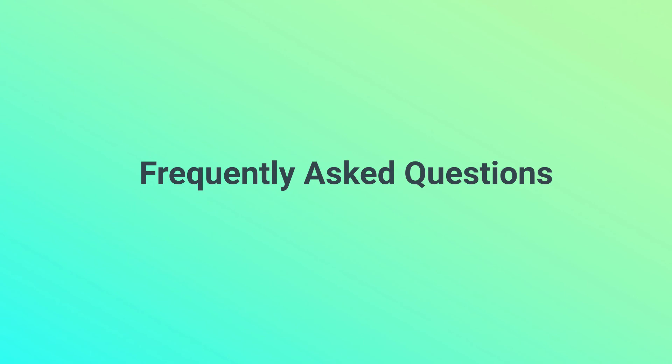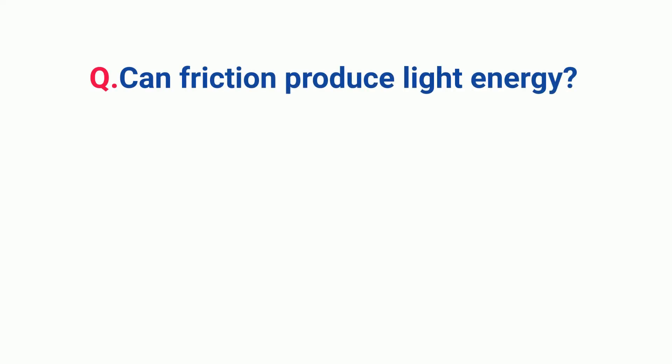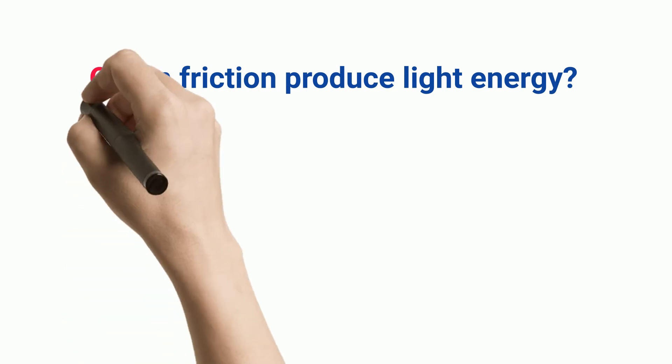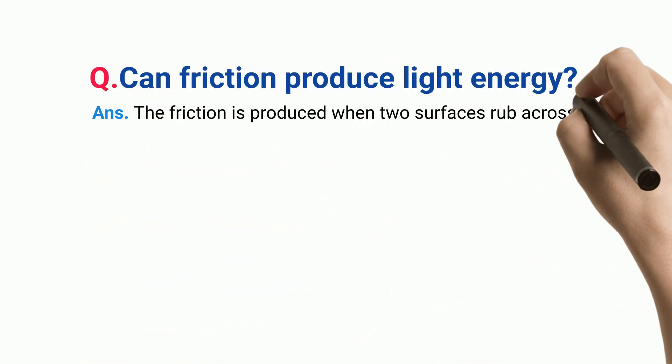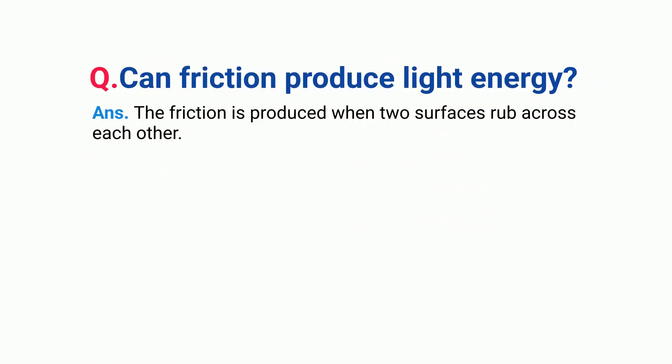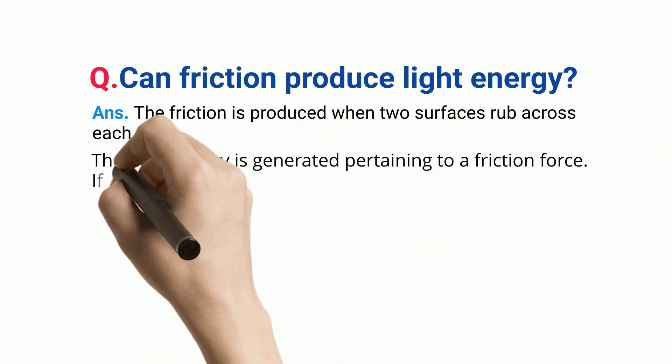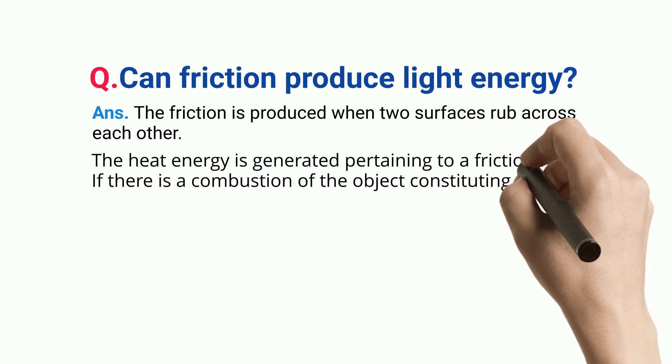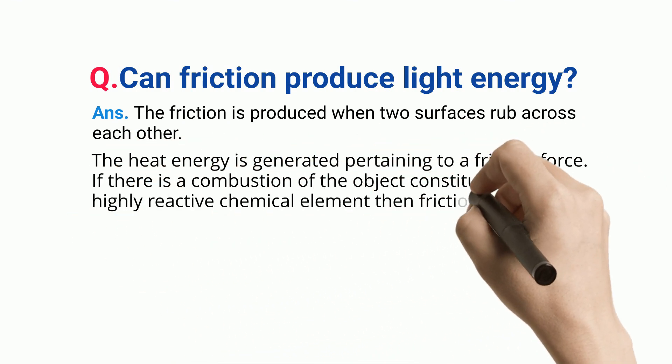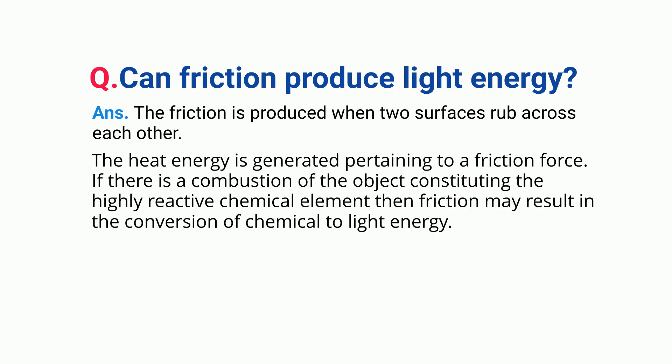Frequently Asked Questions. Can friction produce light energy? The friction is produced when two surfaces rub across each other. The heat energy is generated pertaining to a friction force. If there is a combustion of the object constituting the highly reactive chemical element, then friction may result in the conversion of chemical to light energy.